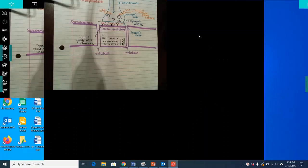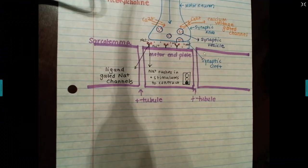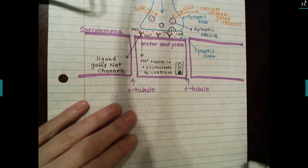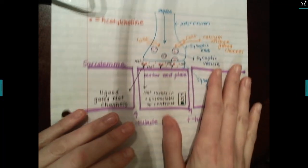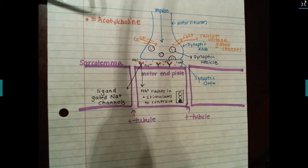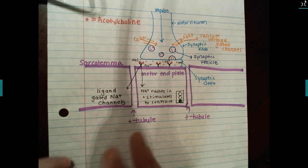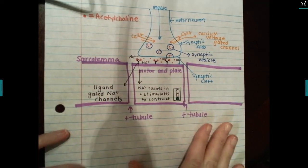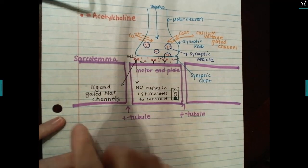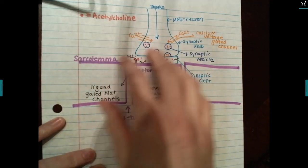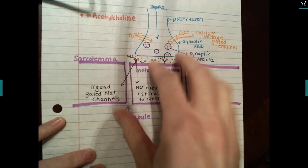We're going to get started with muscle contraction, but first let me go over the neuromuscular junction paper one more time. Some of you sent questions about the diagram you have to fill in for homework, and I want to use the diagram we did earlier to fill in the rest of this muscle cell.